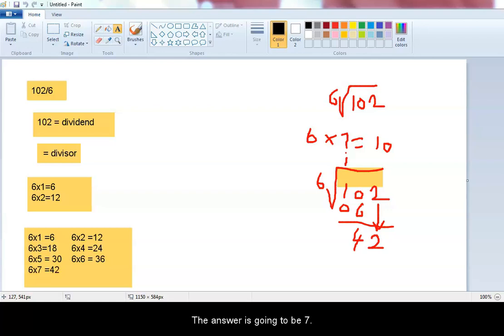The answer is going to be 7. 6 multiplied by 7 equals 42. 7 multiplied by 6 equals 42. So we now get back to our division and put a 7 here. So multiply, 7 multiplied by 6 gives 42.